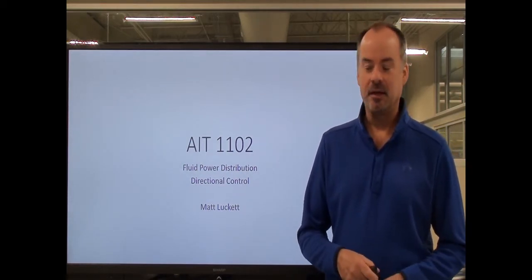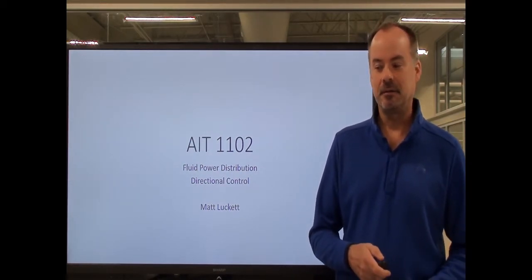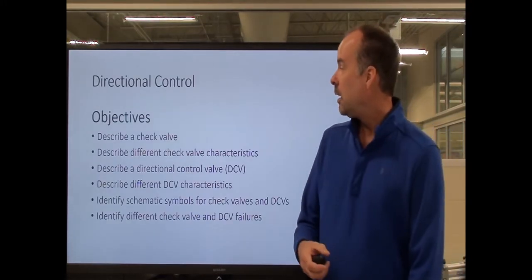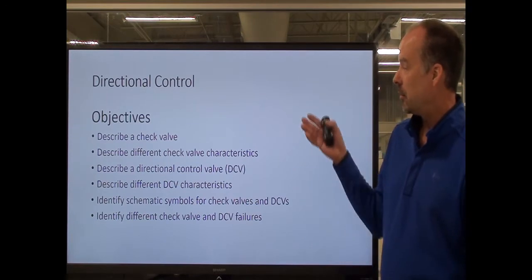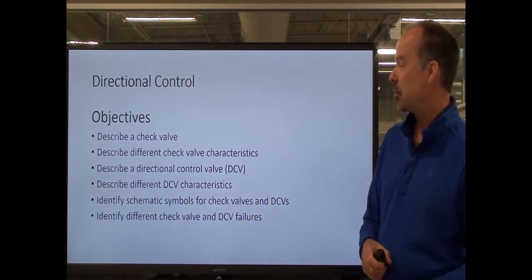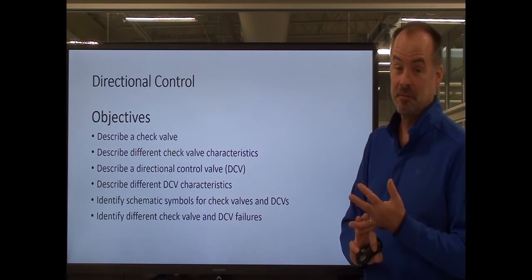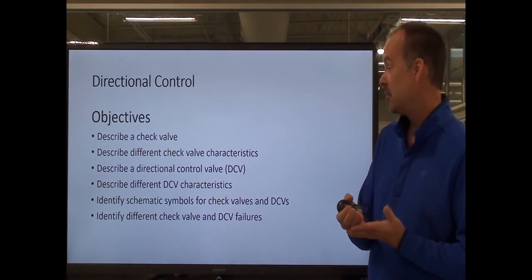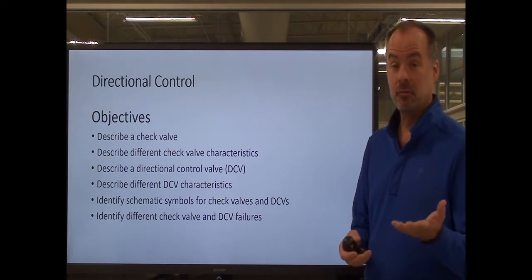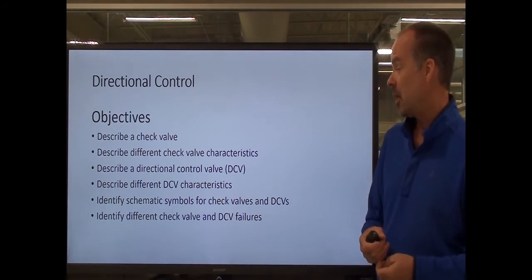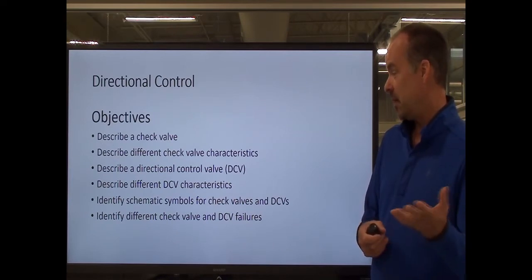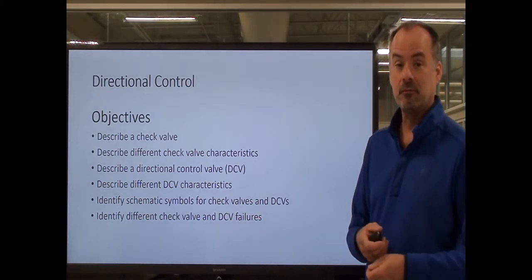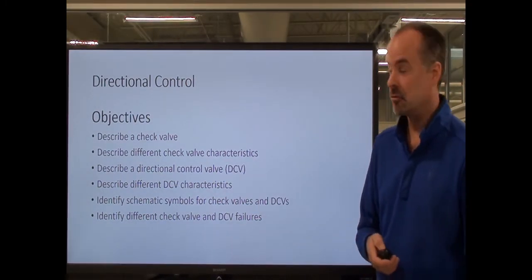Hello and welcome back to AIT 1102. My name is Matt Luckett, and for this lesson we're going to be discussing directional control. In this presentation we're going to describe what a check valve is, describe the different types of check valve characteristics, describe what a directional control valve is — also known as a DCV — describe different DCV characteristics, identify schematic symbols, and look at potential causes for failures in check valves and directional control valves.